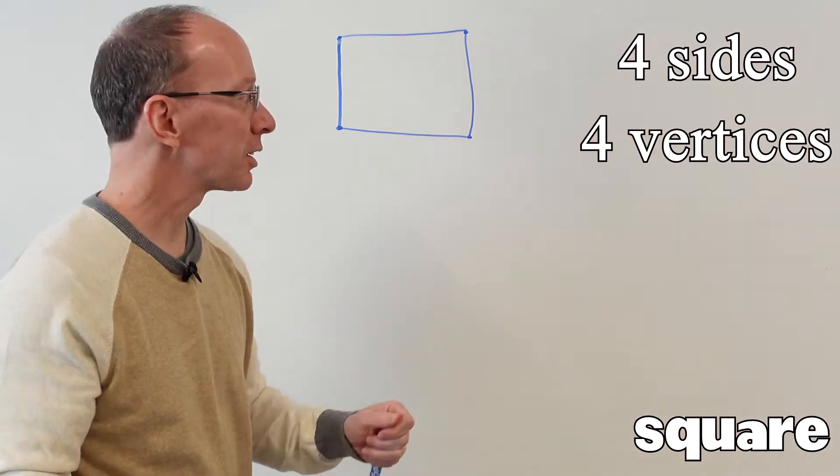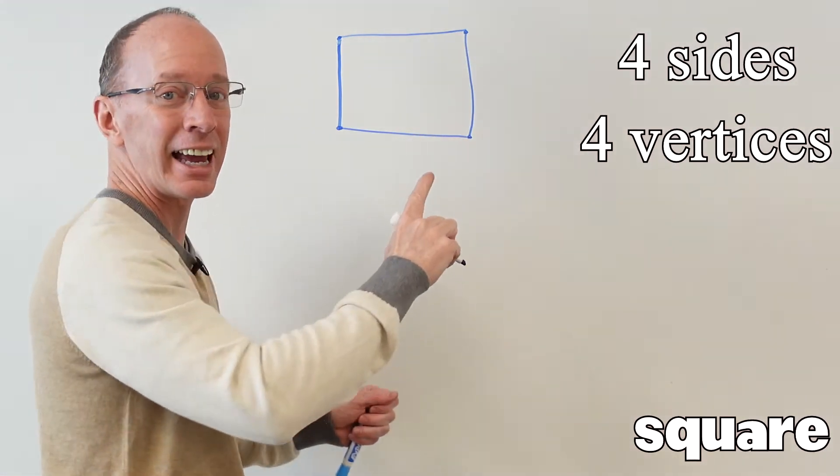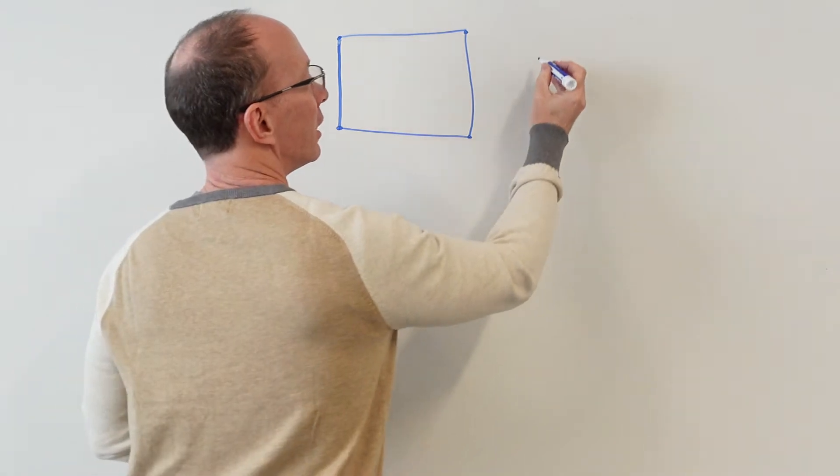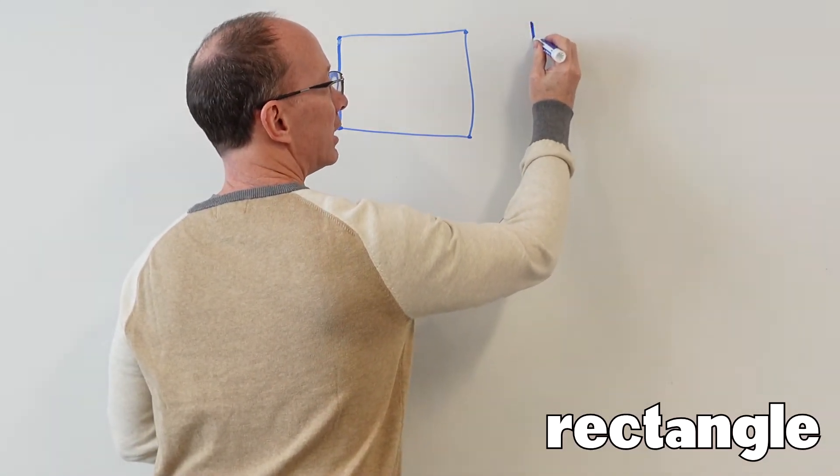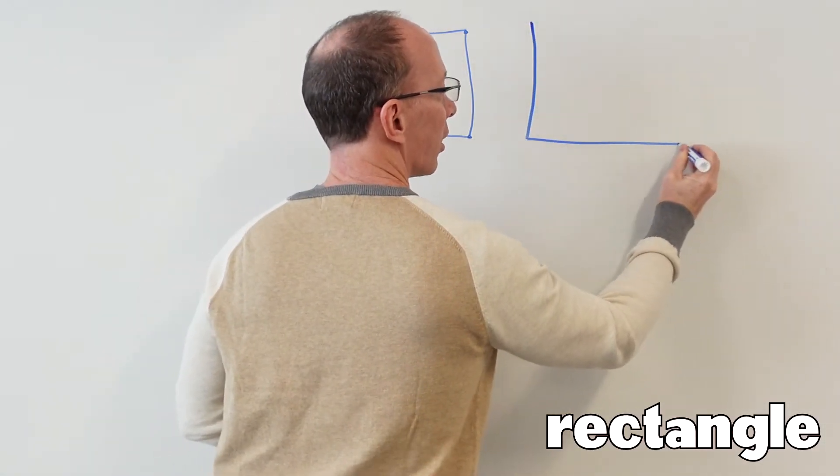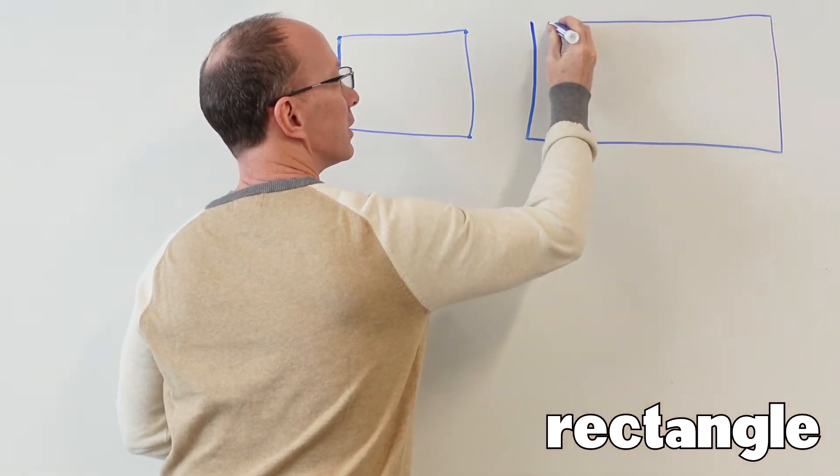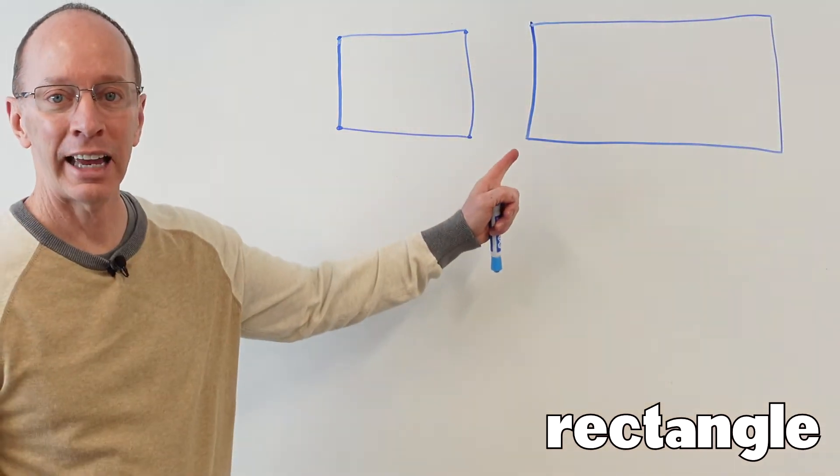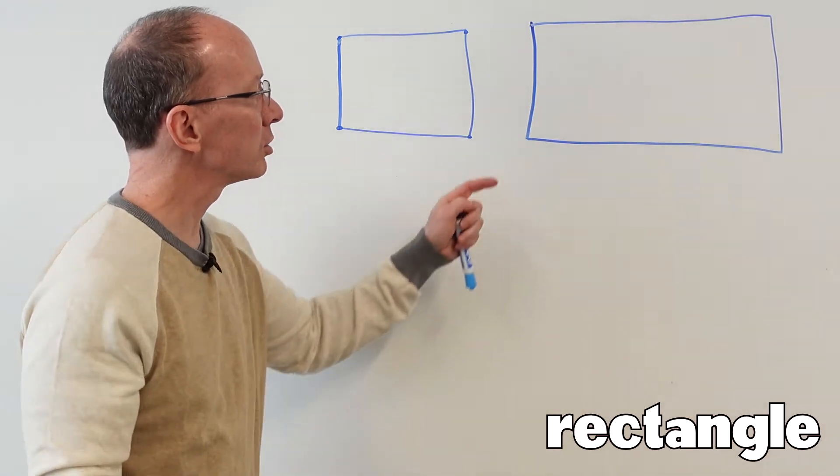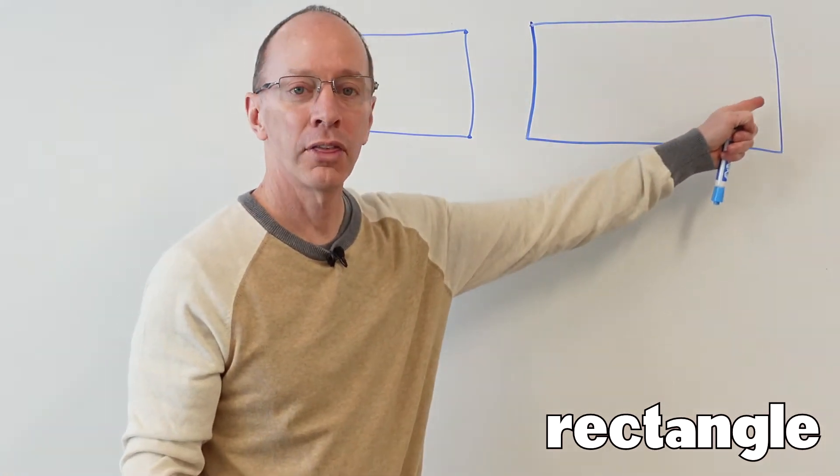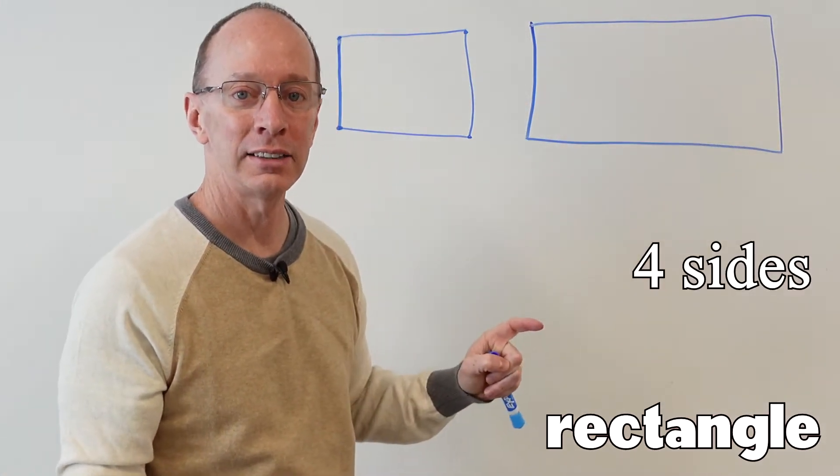So let's go take a look at a rectangle. A rectangle is like a square, but it's longer, like this. This is a rectangle. It also has one, two, three, four sides,